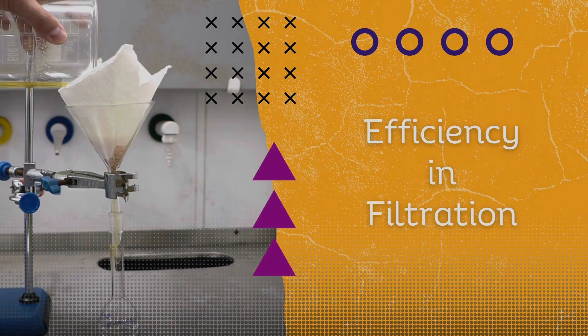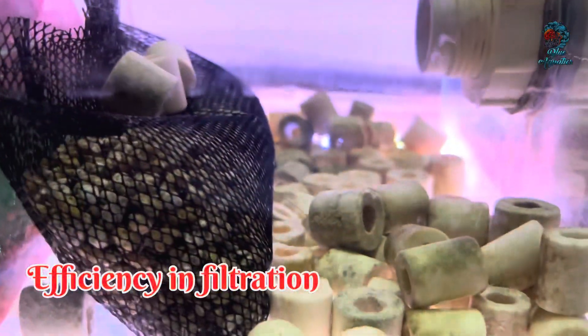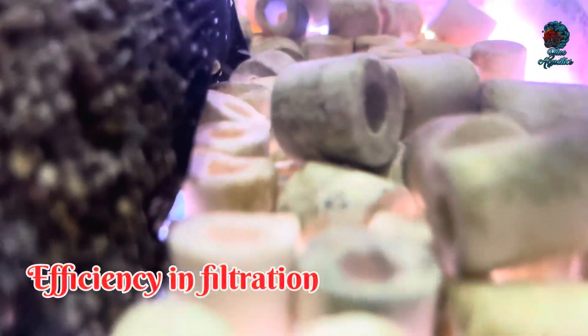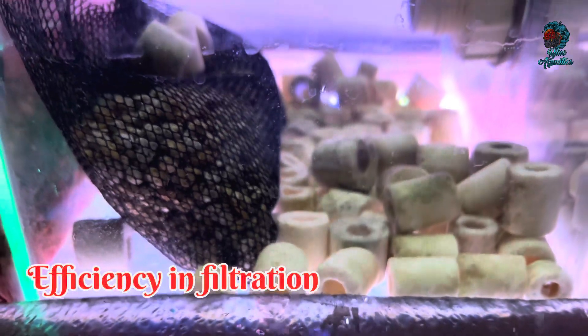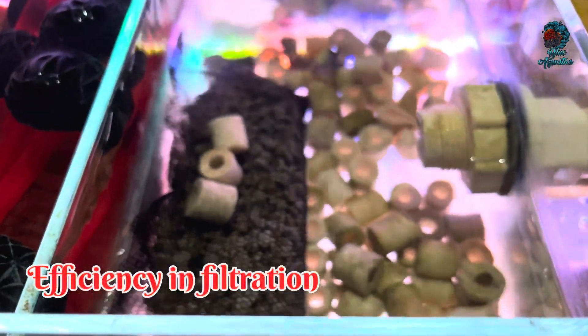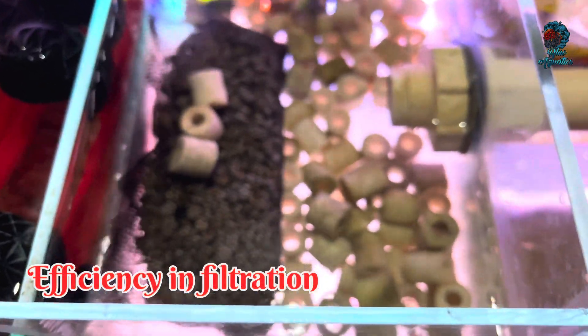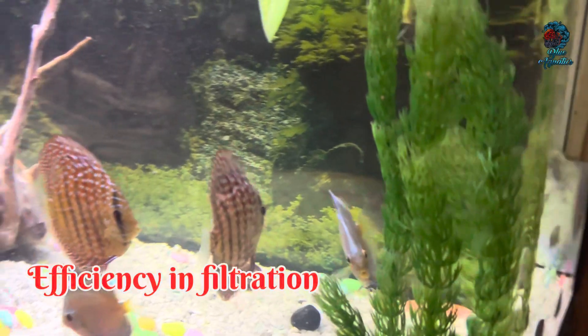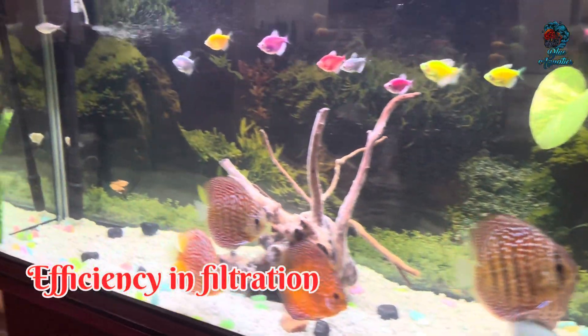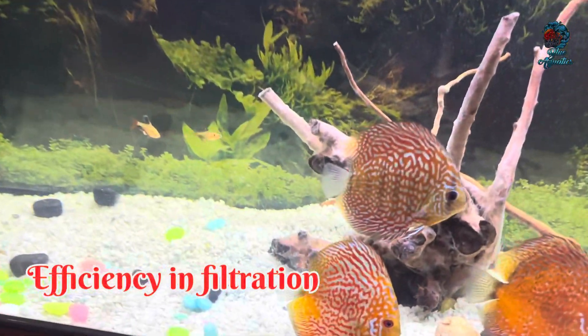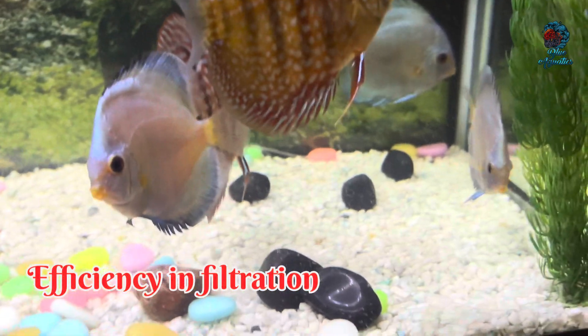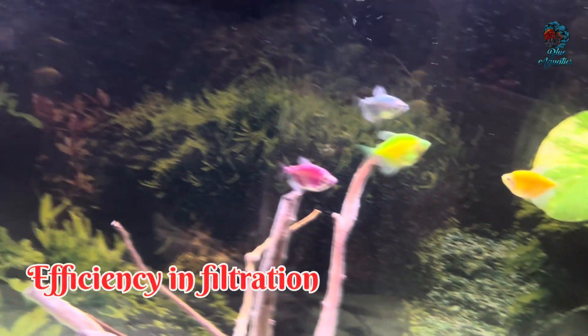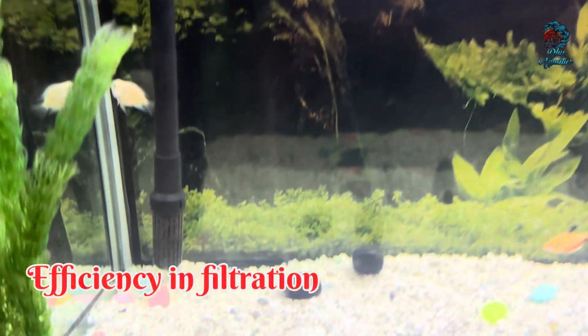Efficiency in filtration. The efficiency of biological filtration depends on the ability of the media to support a large colony of beneficial bacteria. Ceramic rings excel in this aspect due to their high surface area and porosity. They provide a stable environment for bacteria to colonize, enhancing the efficiency of biological filtration. Tank stones, while visually appealing, do not offer the same level of efficiency. Their limited surface area restricts the number of bacteria that can colonize them, making them less effective for biological filtration. Therefore, relying solely on tank stones for biological filtration is not recommended.